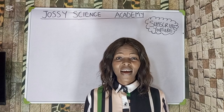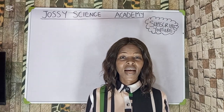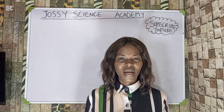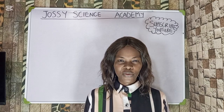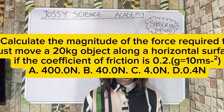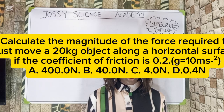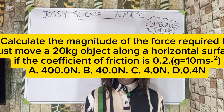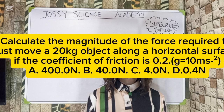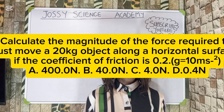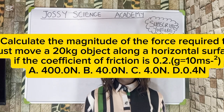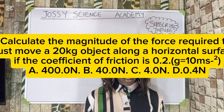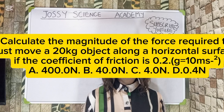If you are joining for the first time, don't forget to subscribe to this channel and turn on notifications because there is a lot to gain here — both practical theory and analysis. With no further ado, let's get right into the video. Calculate the magnitude of the force required to just move a 20 kg object along the horizontal surface if the coefficient of friction is 0.2 and g is 10 m/s². Options: A) 400.0 N, B) 40.0 N, C) 4.0 N, D) 0.4 N.